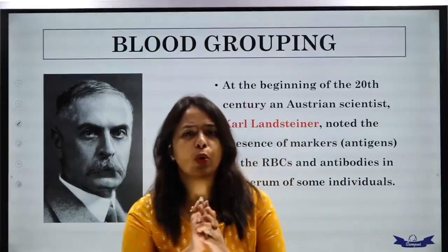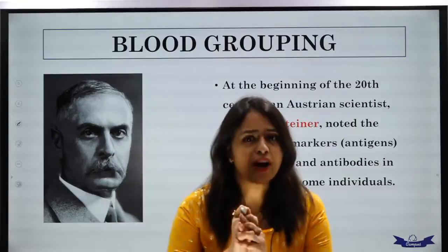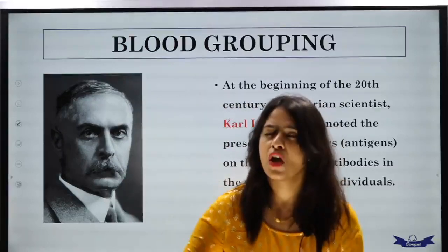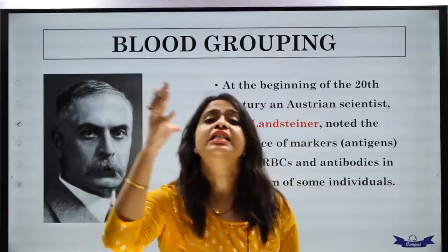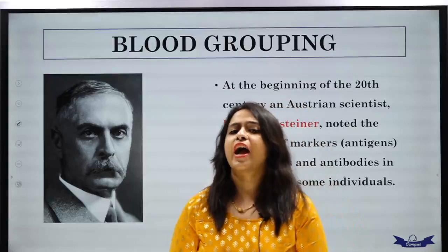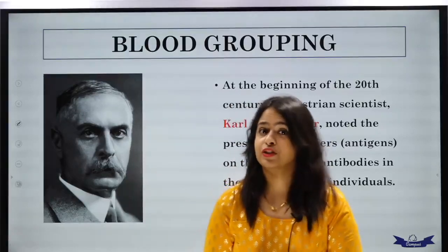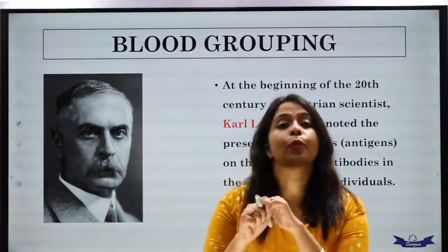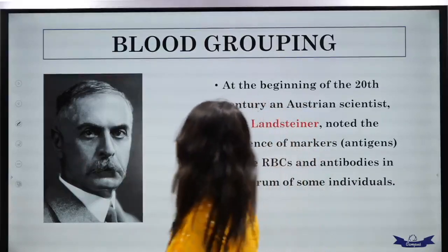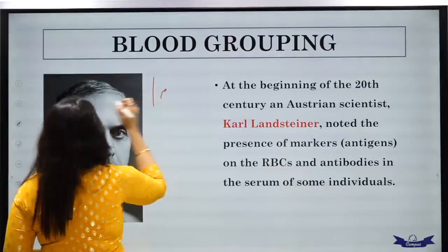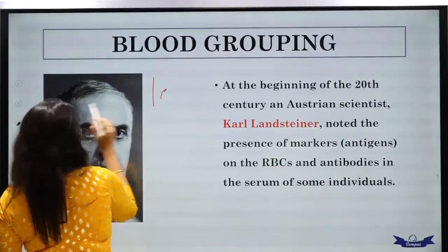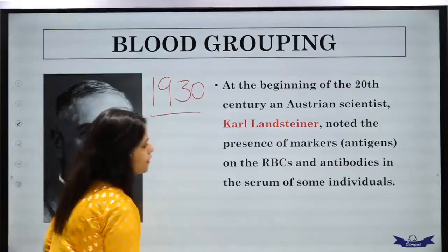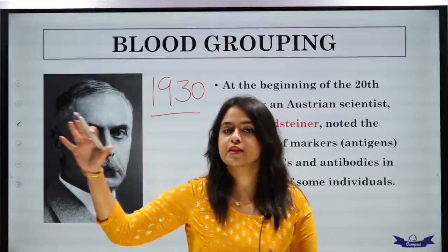They observed that red blood cells had certain markers, and they named these antigens. When another individual received serum, there was a reaction. They named it the agglutination reaction. And Karl Landsteiner received the Nobel Prize in 1930 for this discovery.